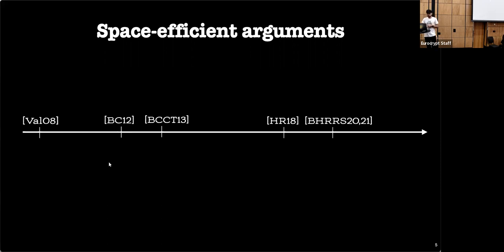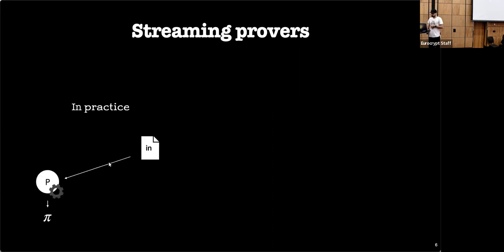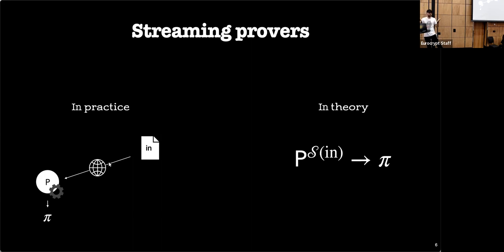There's already some literature on space-efficient succinct arguments, mostly TCC papers. We've worked on recursive proofs as a means of preserving time and space, and more recently on streaming provers — provers that can produce a proof after receiving inputs as a stream. In practice, the prover gets a stream of data, runs in logarithmic space, and produces a proof. In theory, we model this as a Turing machine with an oracle that yields elements one by one, supporting seek-to-beginning, running in log space.